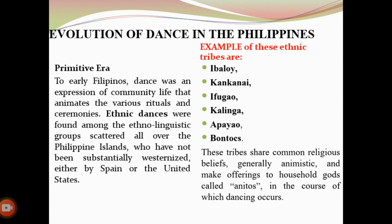Some examples of ethnic tribes are Ibaloy, Kankanay, Ipugaw, Kalinga, Apayao, and Bontoc. These tribes share common religious beliefs, generally animistic, and make offerings to household gods called anitos, in the course of which dancing occurs.